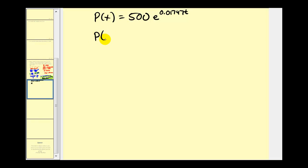So P of 24 is going to be equal to 500 times e raised to the power of 0.01747 times 24.